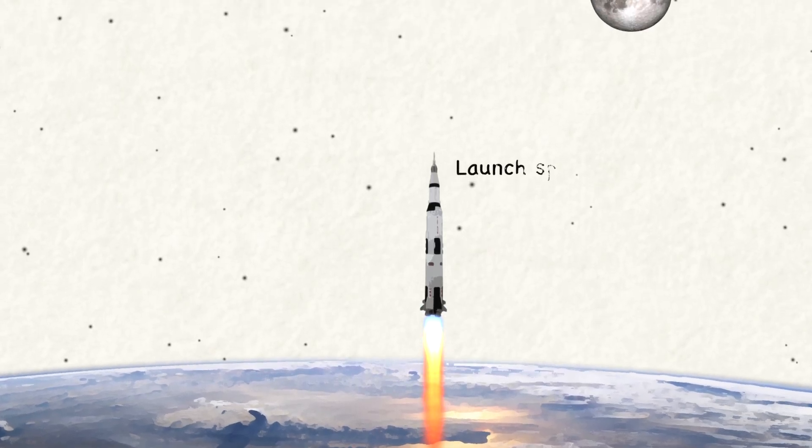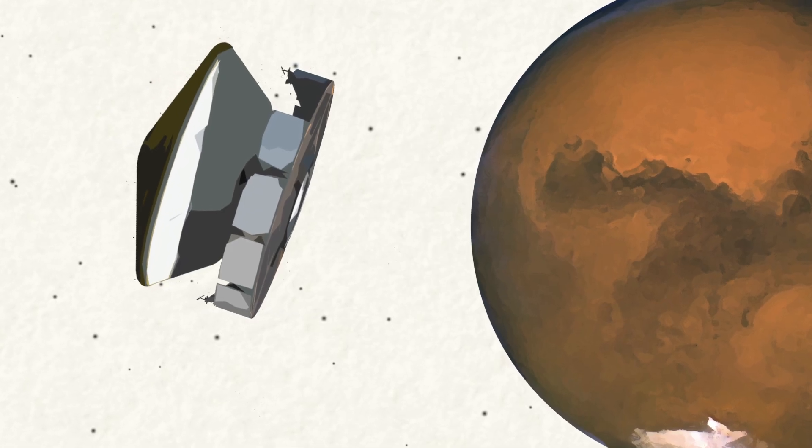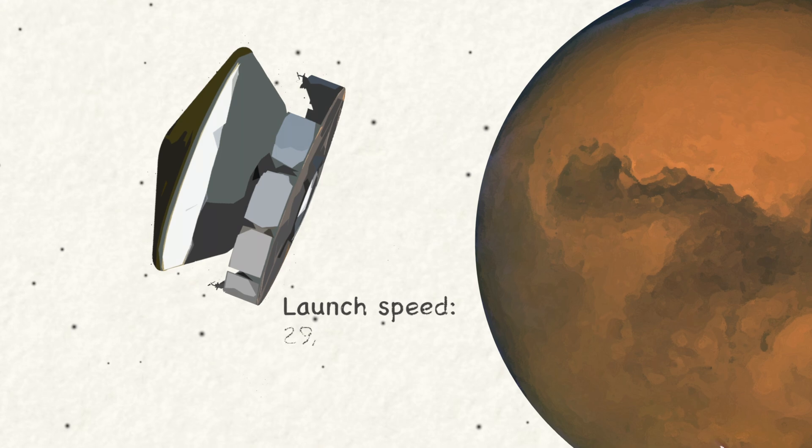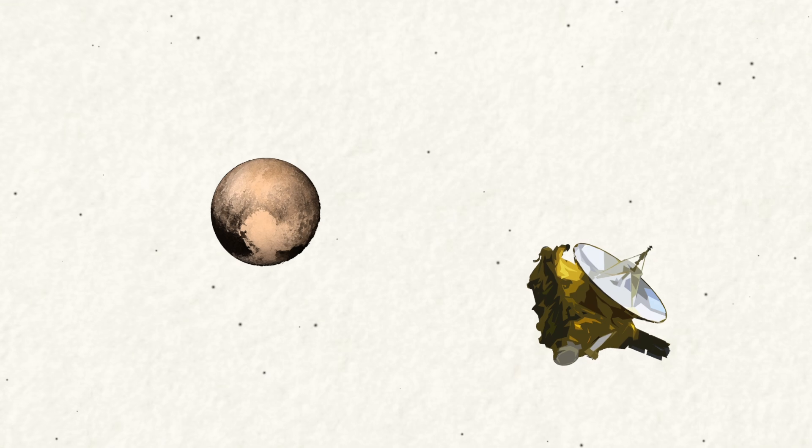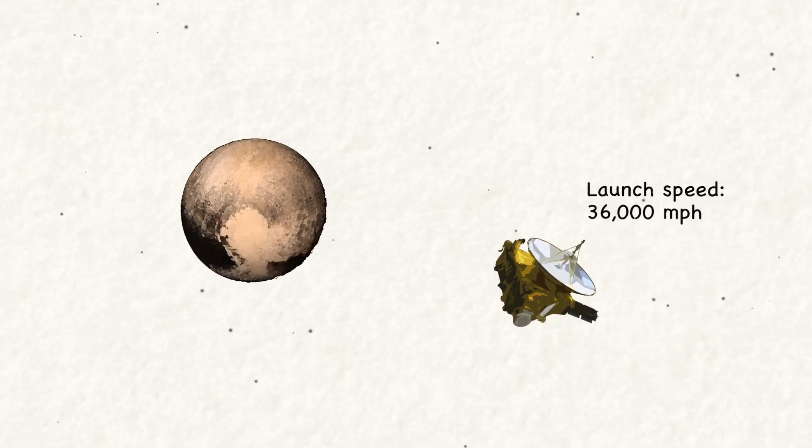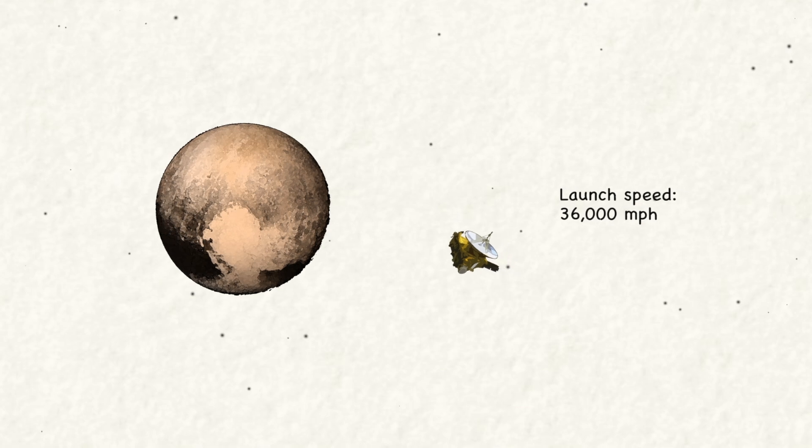Spacecraft have to go upward at only 25,000 miles an hour to escape Earth. Getting to Mars only requires a bit more speed, 29,000 miles an hour. New Horizons, which NASA sent rushing out to Pluto, managed 36,000 miles per hour, or a little more than half what it would have to do to hit the Sun instead.